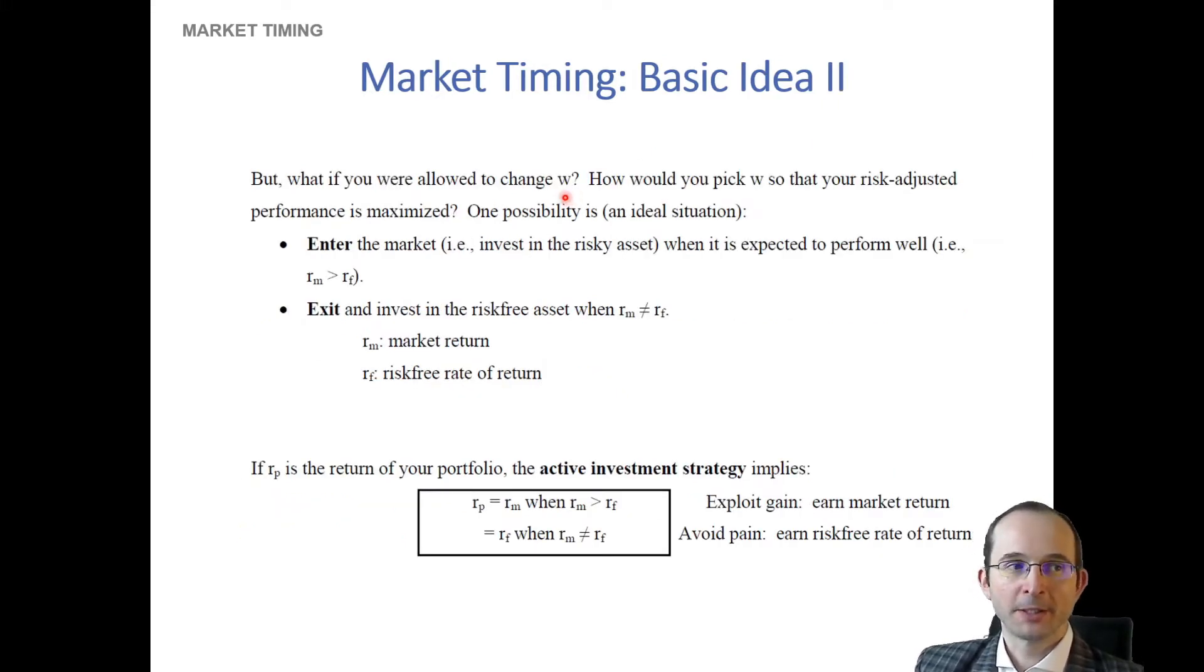But in a way, what a market timer says is that I can adjust the W, the weight in the risky asset, such that I can actually increase performance, because I know when favorable and less favorable periods are coming. And of course, the way that you would want to do this, if you indeed could, is you would want to increase your weight in the risky asset when that is expected to perform well, and you'd want to exit it and invest in the risk-free asset more when it is expected to perform poorly.